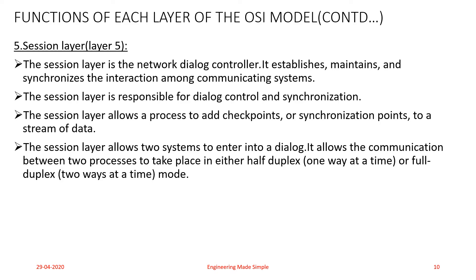To understand synchronization with an example: if a communication system is sending a file of 2000 pages, it is advisable to insert checkpoints after every 100 pages to ensure that each 100-page unit is received correctly and acknowledged independently. In case a crash happens during transmission at page number 523, then only the pages 501 to 523 need to be resent after system recovery, as the communication failure occurred while sending data at page 523.